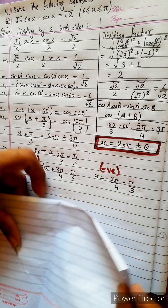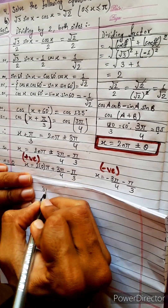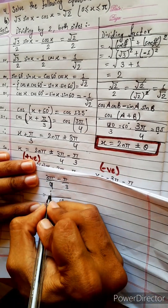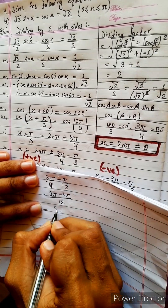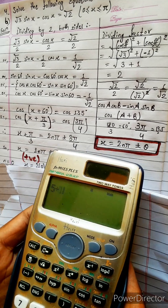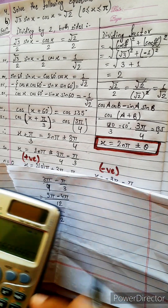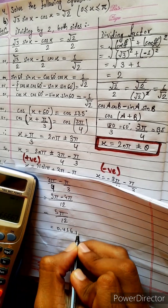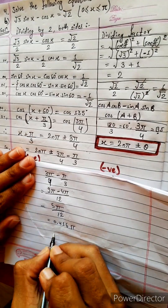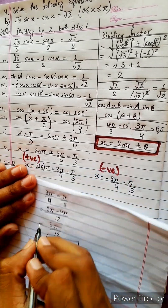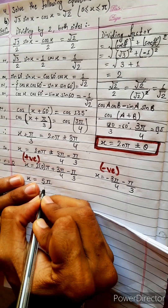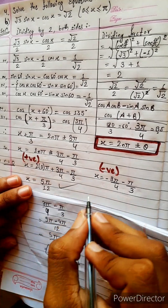In rough work: 3π by 4 minus π by 3. LCM 12: 9π minus 4π. How much is it? 5π by 12. 5π by 12 means approximately 0.416π. Is this in the range 0 to π? Yes — π means 1π. So it is in the range. Note it down: x equals 5π by 12. This is our required solution — one of the solutions.